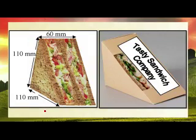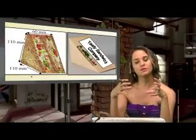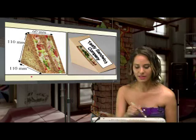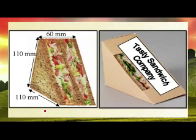So they look like this. In a square you can get two triangular prisms, basically. And these are the dimensions that we will be working with.